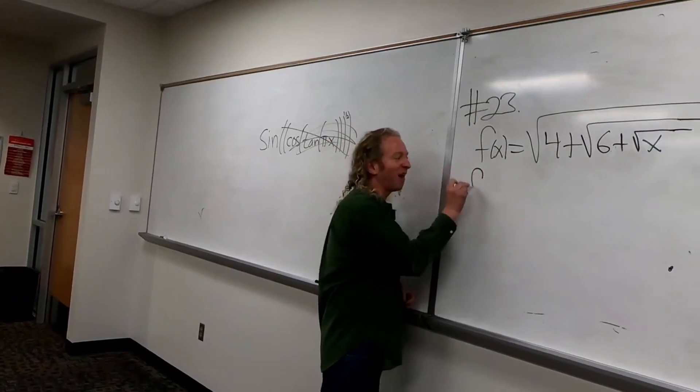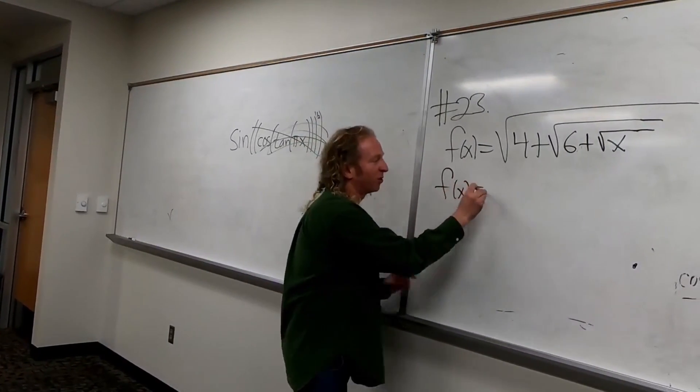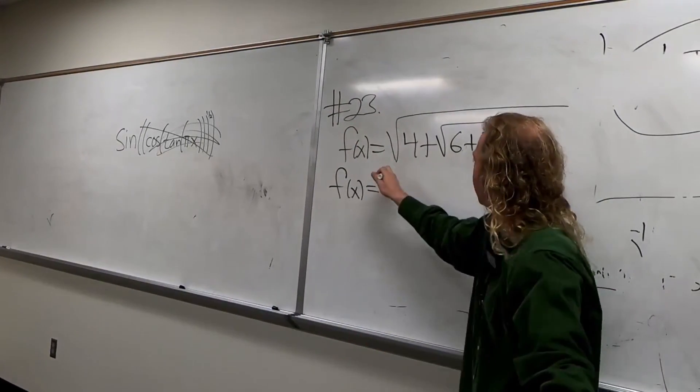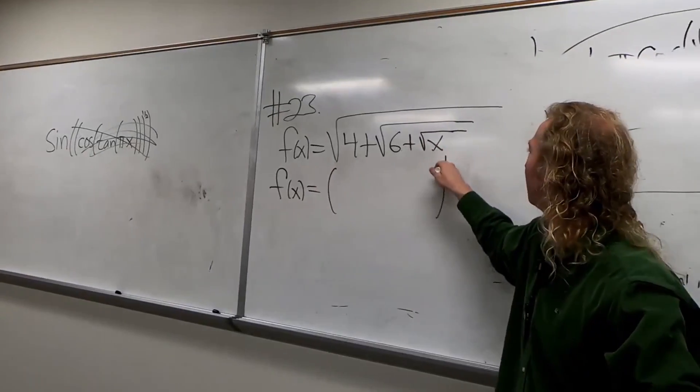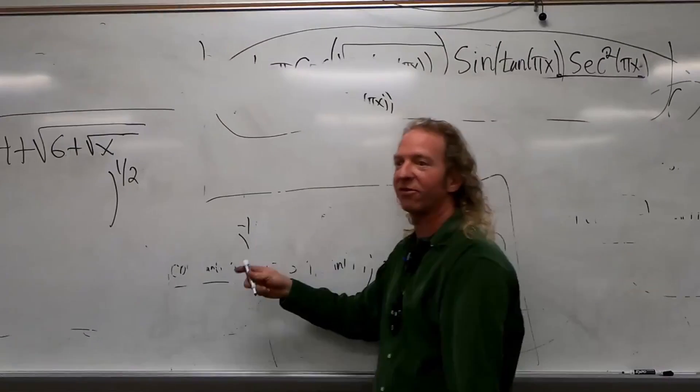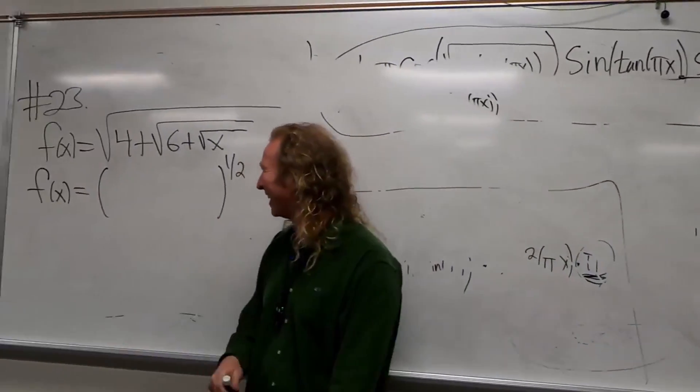The first step is to rewrite everything in terms of square roots. So let's see, so this whole thing is a square root, right? So this whole thing is a one-half power, so it's like this. Right? Well, I'm still writing f. Ah, I see, okay.